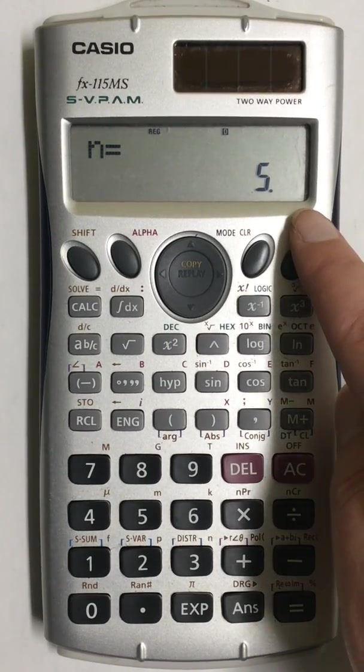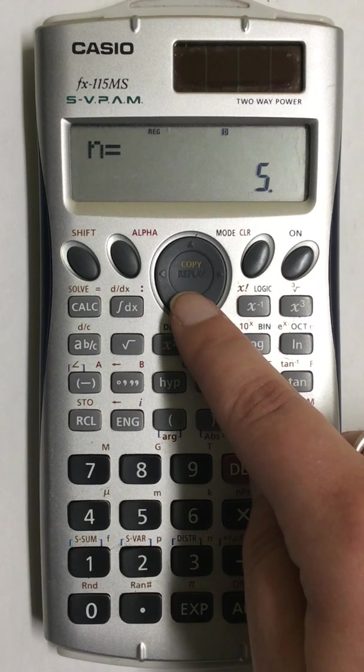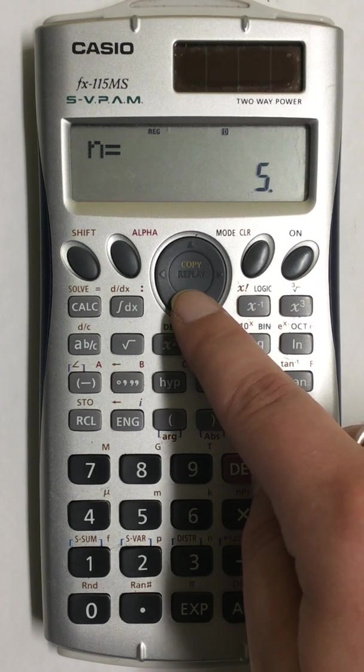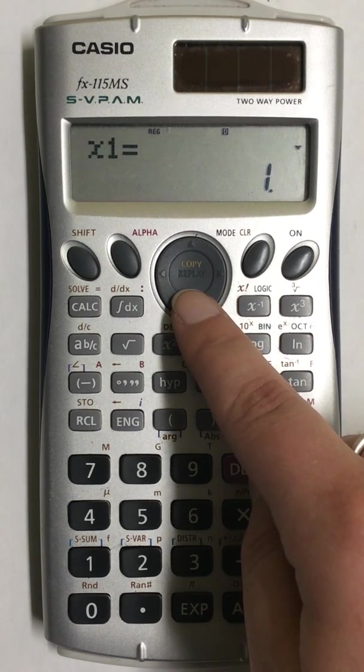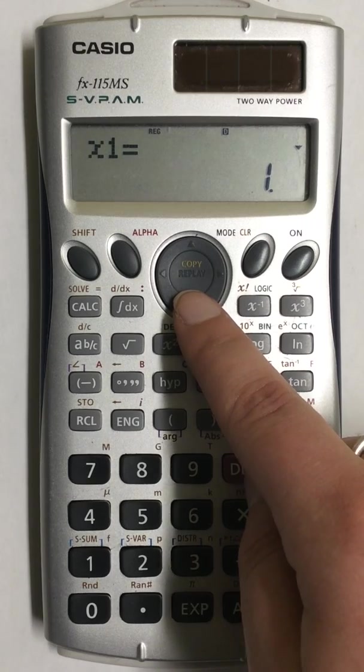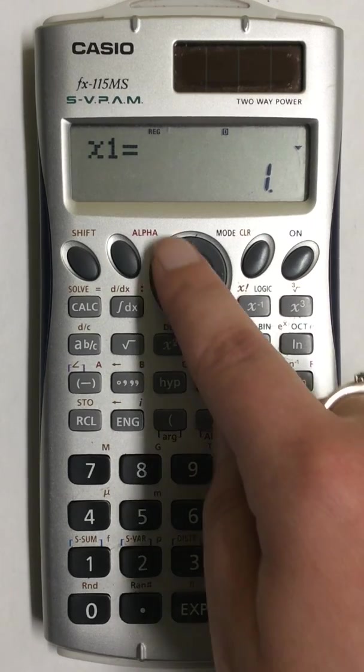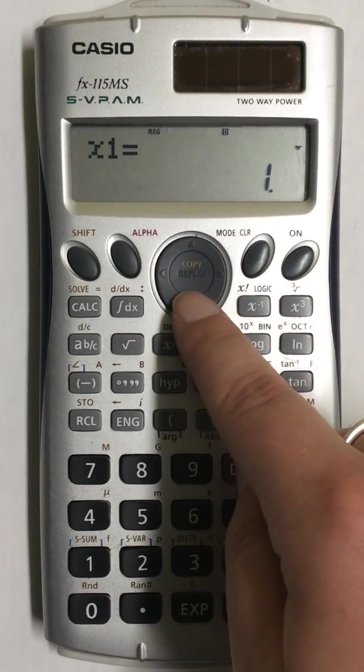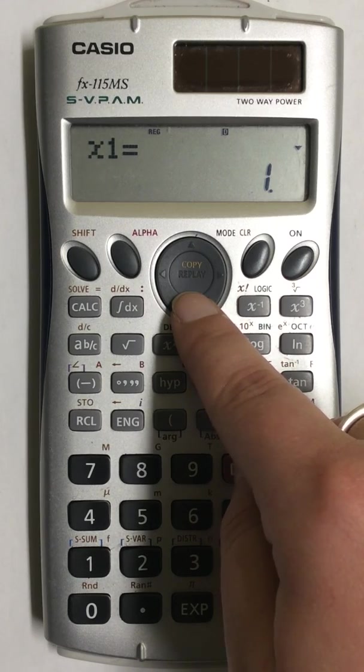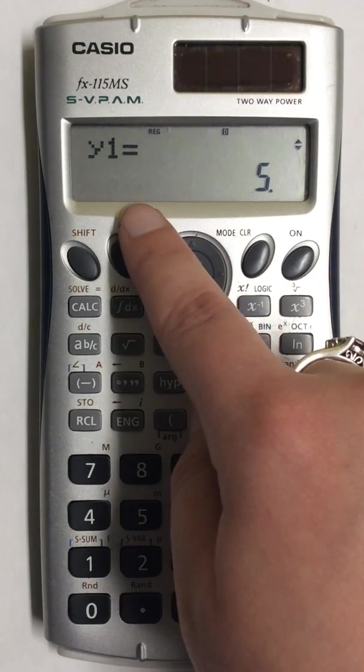To review all of your numbers, press the down arrow. It will go through and show you all of your numbers, listing them as X and Y and giving them a number.